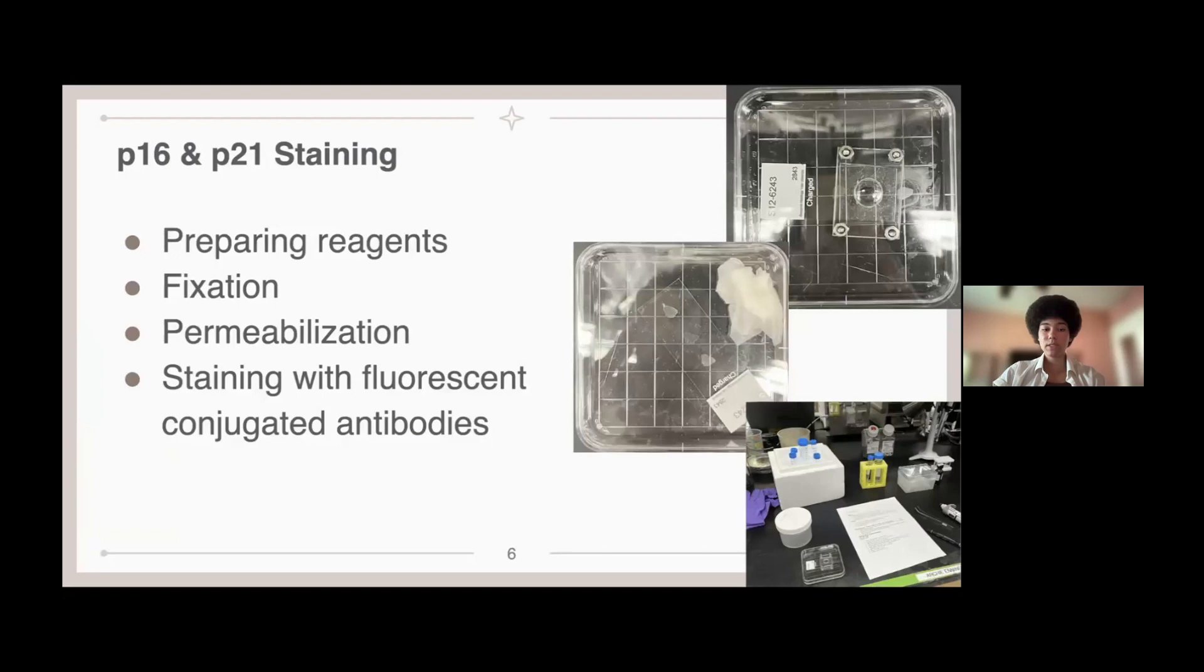And so this is the actual staining of P16 and P21. We prepared a 2% PFA and then a dilution and blocking buffer to be used. So for the fixation step, we fixed the tissue with the 2% PFA and then washed it with PBS and dipped it in water and air dried.